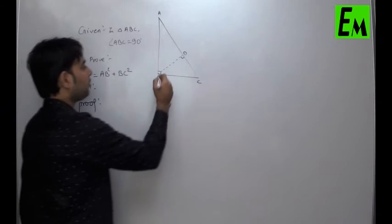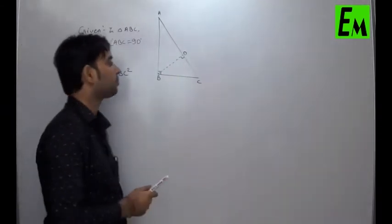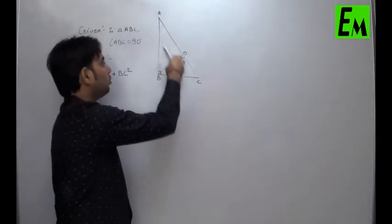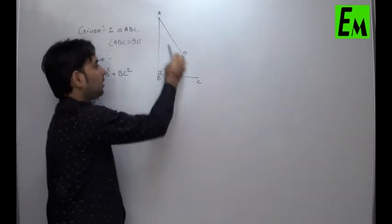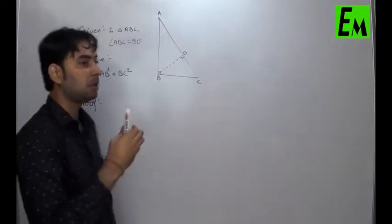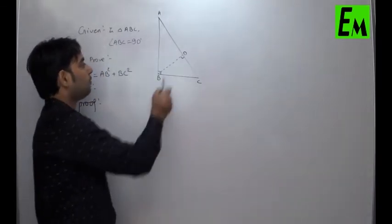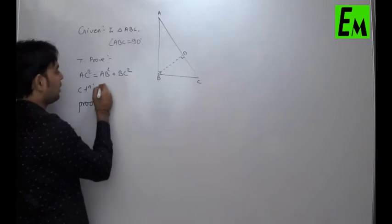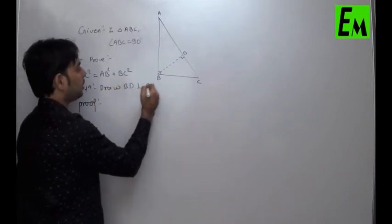Construction: we have to draw BD perpendicular to AC. When BD perpendicular to AC is drawn, two new right-angled triangles are formed. These two new right-angled triangles are similar to the original triangle — as we studied in similarity of right-angled triangles. We will use that theorem. So, construction is: draw BD perpendicular to AC.